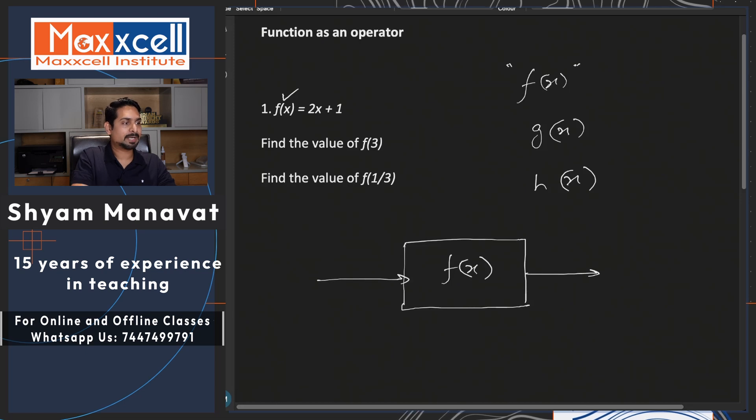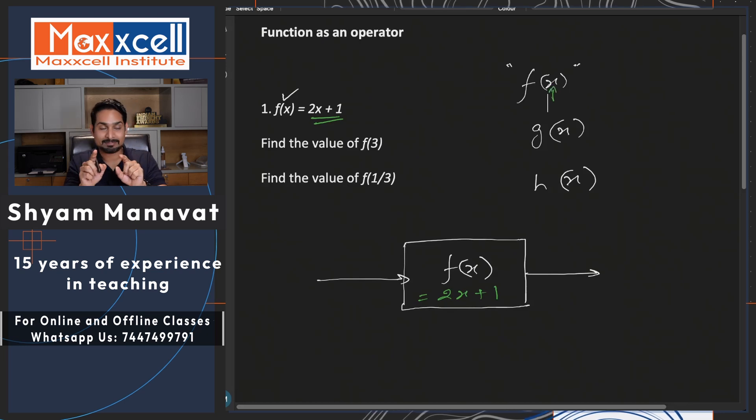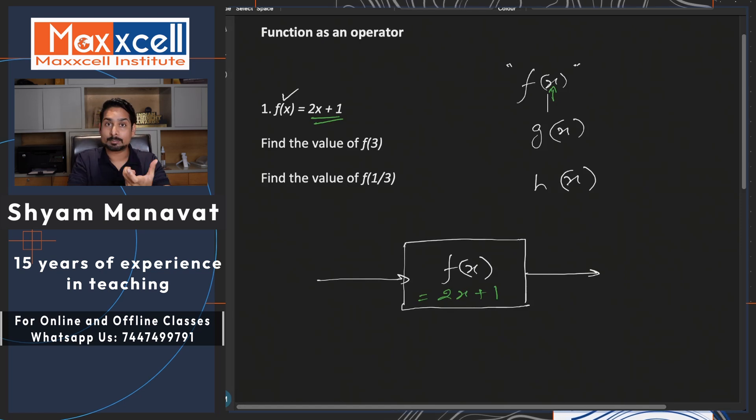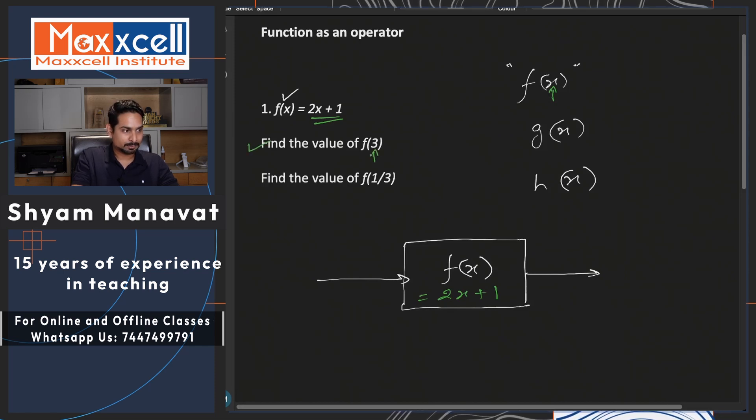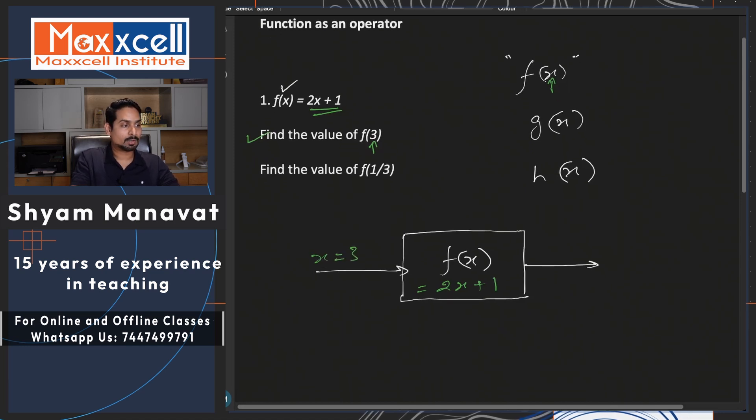Now, functions you can consider as a machine which has an input and it will produce an output. For example, if you have f(x) equal to 2x plus 1. Now, input of the function is this, inside the bracket with f the alphabet, you have a variable that is input. So now here if the input is 3, then what will be the output?